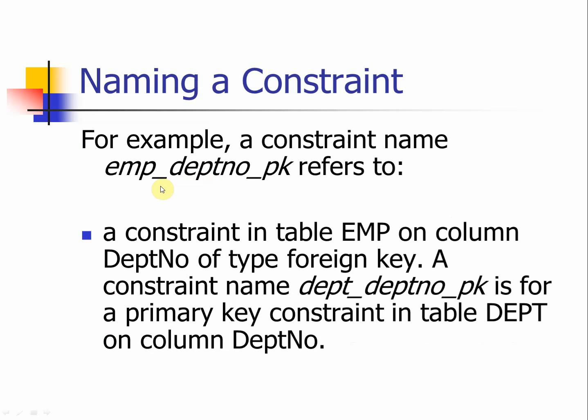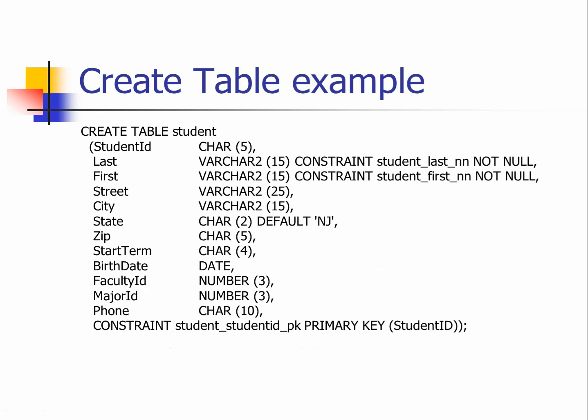For example, even looking at tables we have no idea about — by reading the constraint name like EMP_DEPTNO_PK we can understand that in the employee table, department number is the primary key, which helps with readability. That summarizes the overview of Oracle DDL definition. Starting from this point we will move on to Oracle — in the next class we will learn how to install Oracle and then really start writing all the code in the Oracle environment.